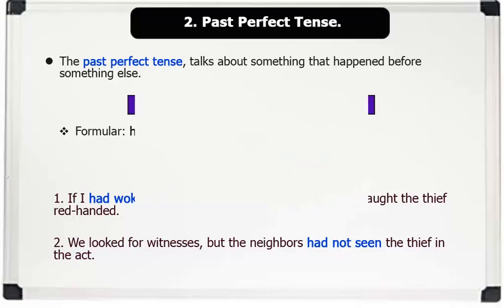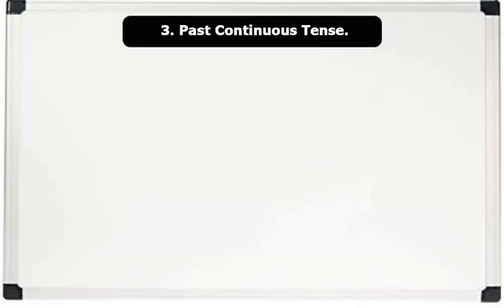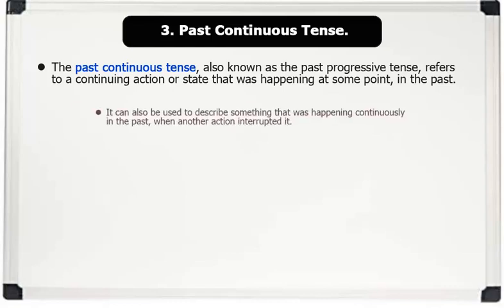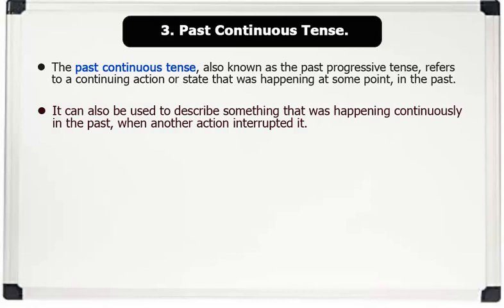3. Past continuous tense. The past continuous tense, also known as the past progressive tense, refers to a continuing action or state that was happening at some point in the past. It can also be used to describe something that was happening continuously in the past when another action interrupted it.